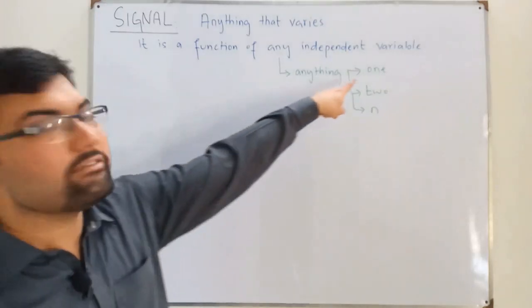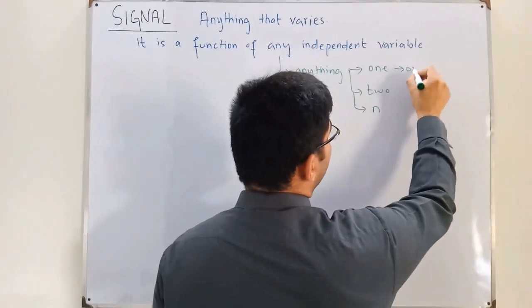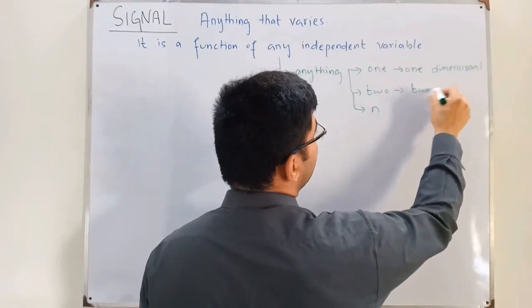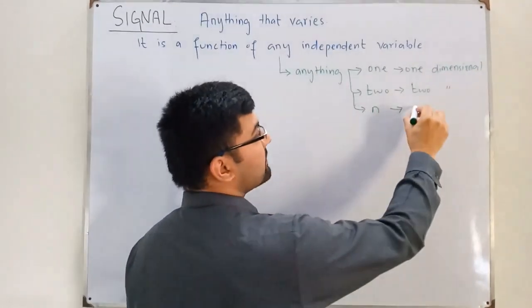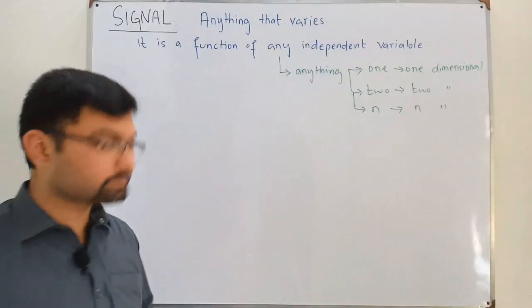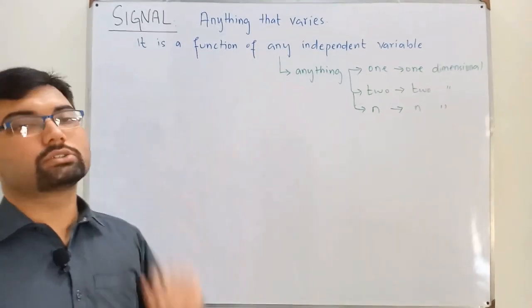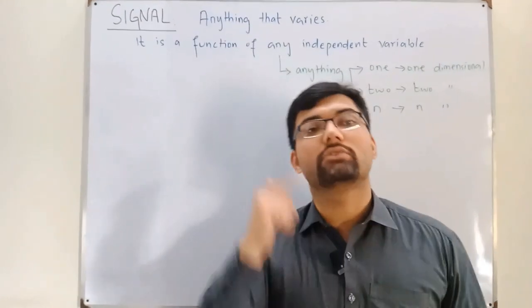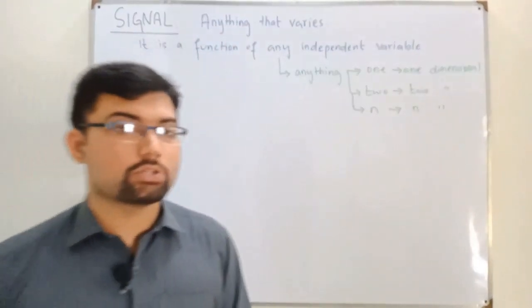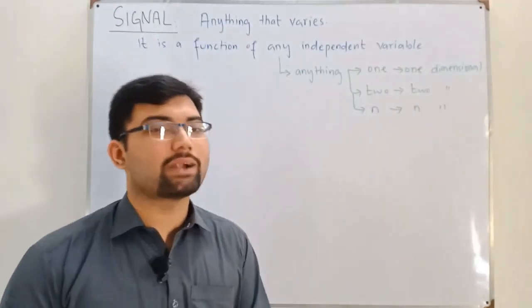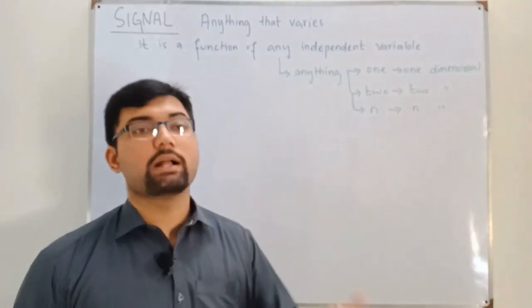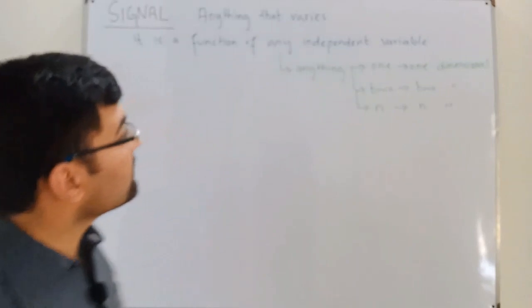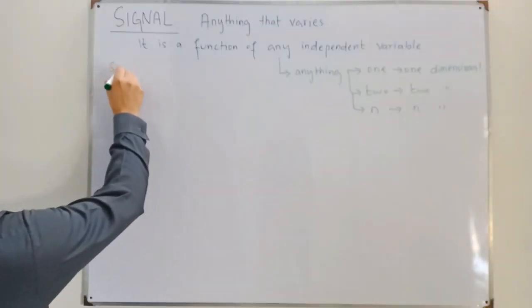If this function depends on one variable, it is called a one-dimensional signal. If it depends on two, it is a two-dimensional signal. If it depends on n variables, it is an n-dimensional signal. People generally confuse the signal to be only a function of time, which is wrong. In this course we will be focusing a hundred percent on signals varying with respect to time, but a signal is not a function of time only.